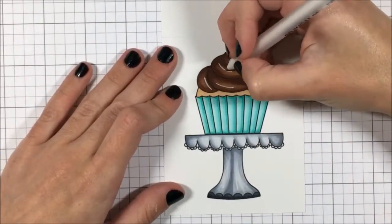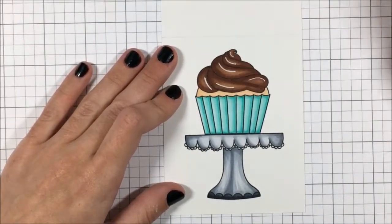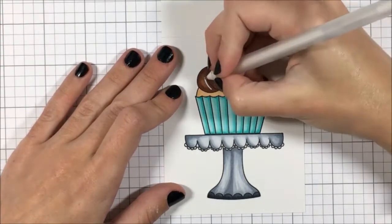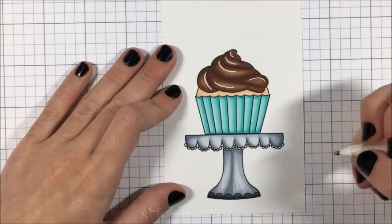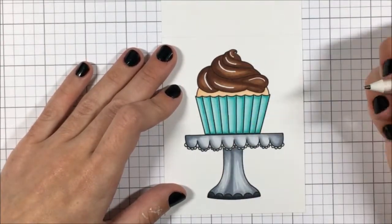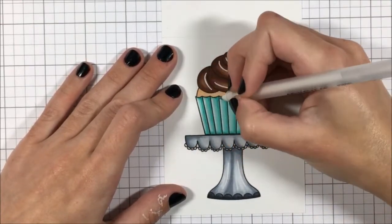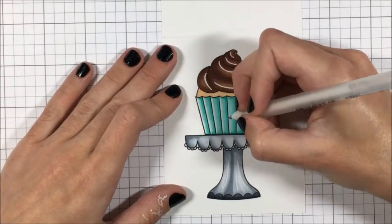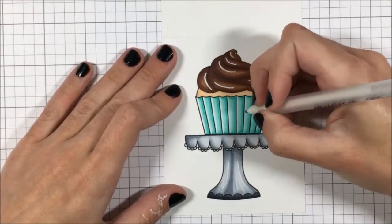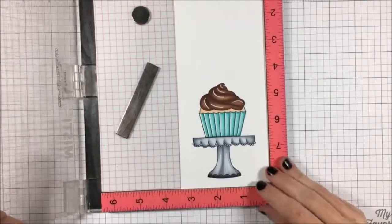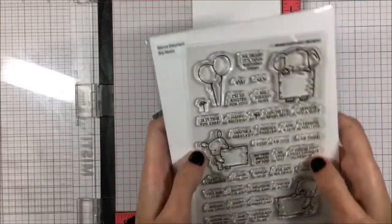Once I am done all my coloring I'm coming in with my Sakura Jelly Roll and this is a 0.8 so it's a little bit bigger in size. As you can see I'm scribbling it on my thumb when it's having trouble getting it to run. I find that the heat can sometimes help it to run a little bit more smoothly. I'm just going in and reinforcing all of those highlights with those bright white lines which I think adds a lot of interest.